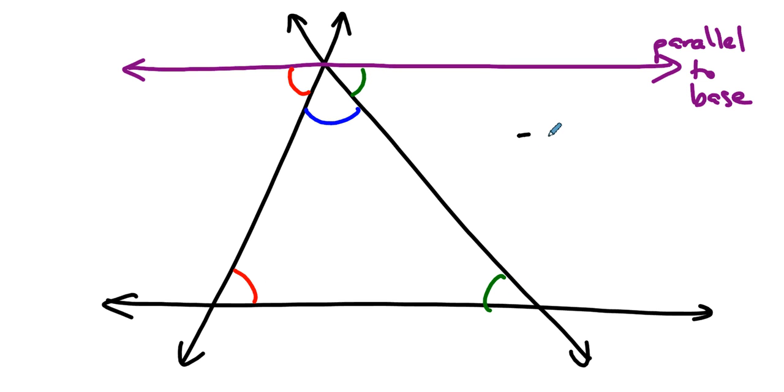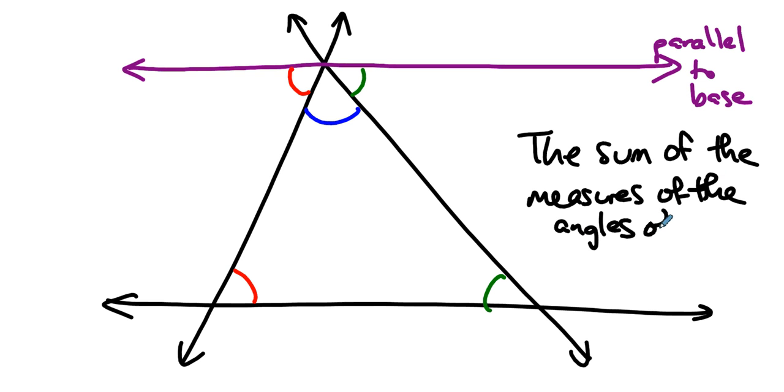And that's why we say that the sum of the measures of the angles of a triangle is 180 degrees. Always, always, no matter how you draw the triangle, you can make one of them the base, you can draw a parallel line to that base through the other vertex, and alternate interior angles are congruent, alternate interior angles are congruent, those three add up to 180 and we're done.